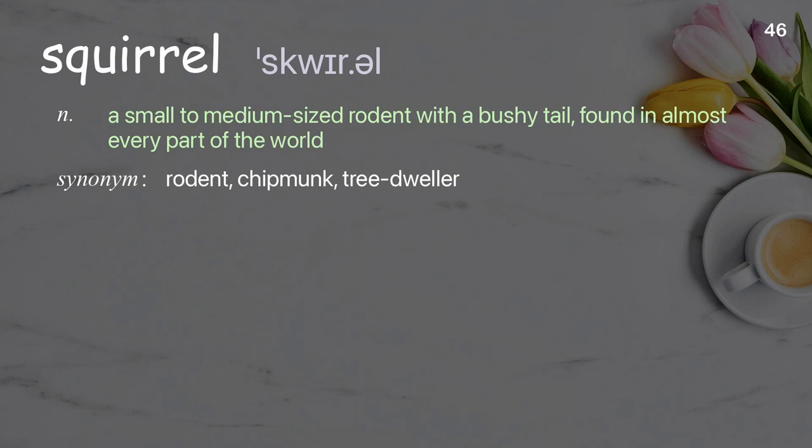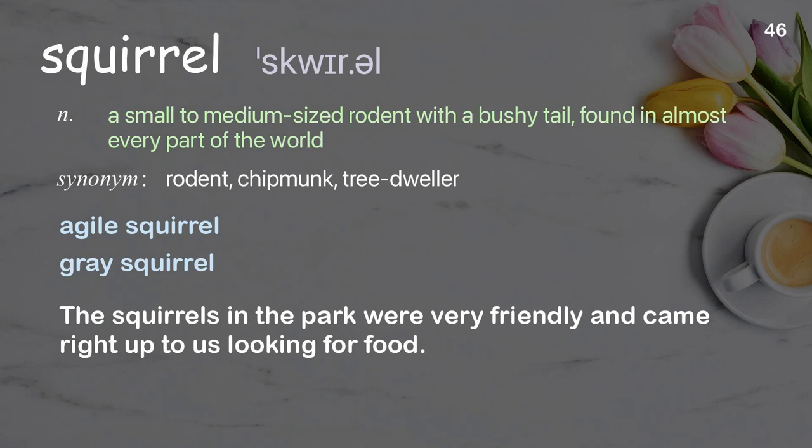Squirrel: a small to medium-sized rodent with a bushy tail, found in almost every part of the world. Examples: agile squirrel; gray squirrel; the squirrels in the park were very friendly and came right up to us looking for food.